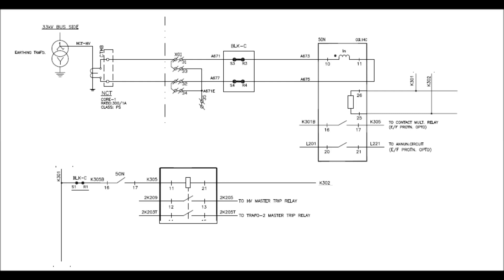The function of this relay is to trip the own transformer as well as the other transformer, including in cases where only one earthing transformer is in service due to maintenance of the other earthing transformer.